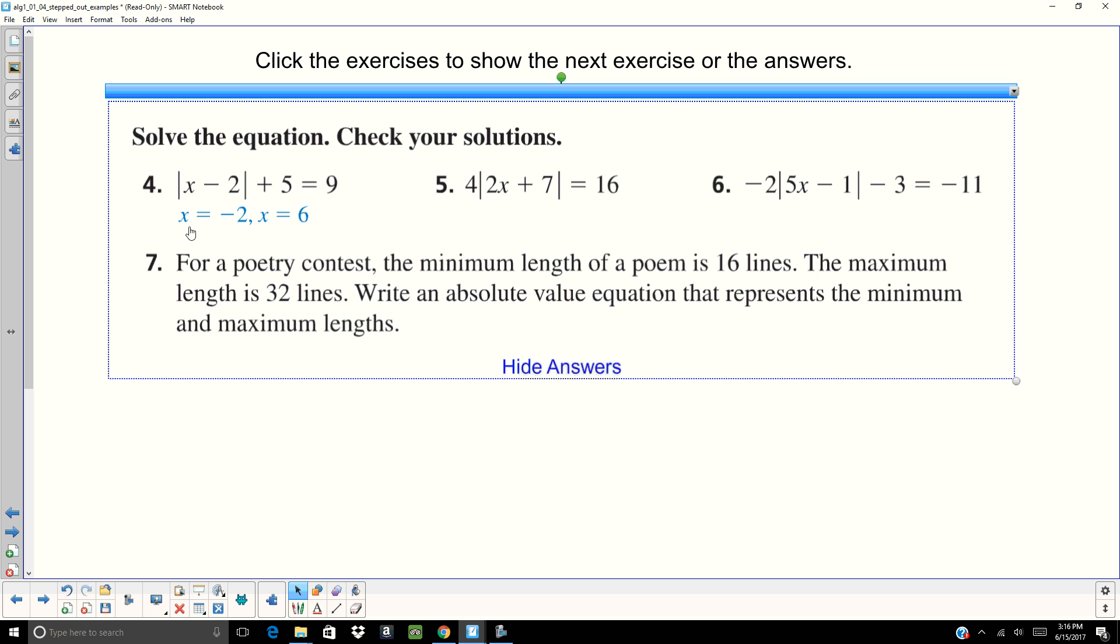For number 4, you need to first subtract 5. Set up your two equations. On number 5, you need to first divide by 4 and then set up your two equations. Number 6, you need to add 3 and then divide by negative 2 and set up your two equations.